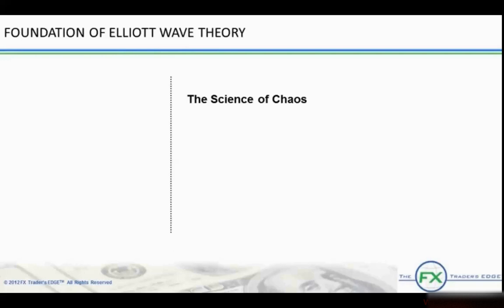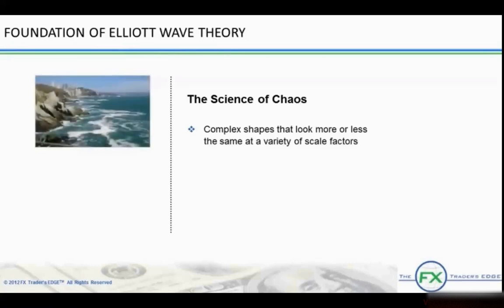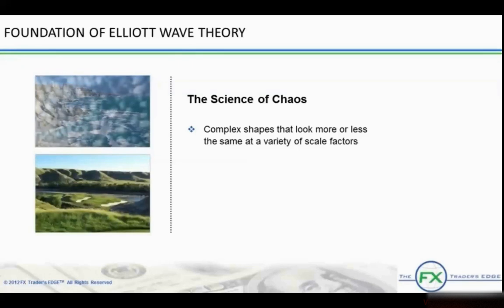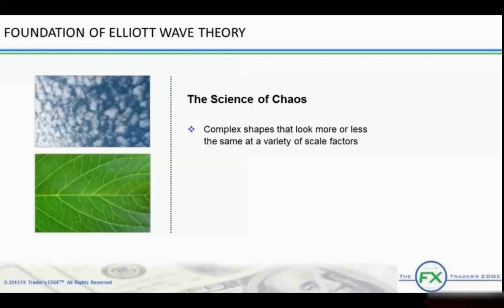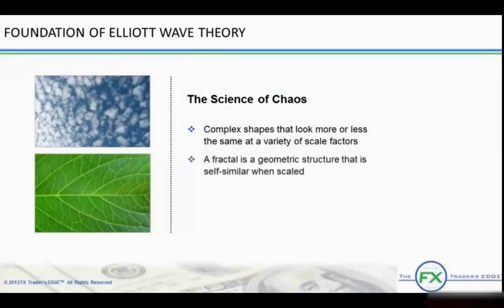Elliott isolated these patterns, or waves, that recur in market price data. These fractal forms, complex shapes which look more or less the same at a wide variety of scale factors, are everywhere in nature. Fractals are found from the coastlines of continents to the courses of rivers, clouds in the sky, branches of plants and veins in their leaves. These fractals, which are self-similar or self-identical patterns, abound. A fractal is a geometric structure that is self-similar when scaled.